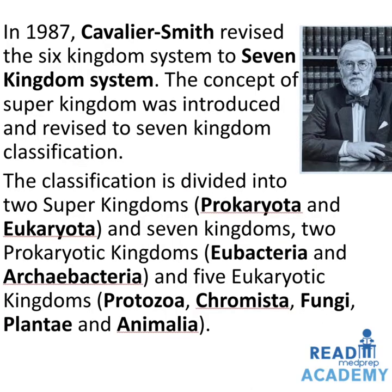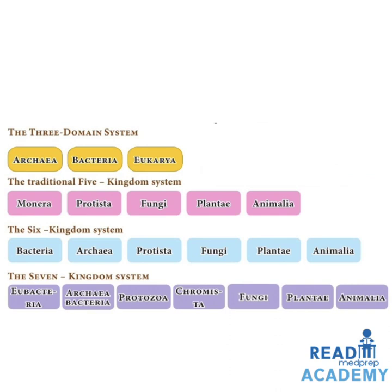In 1987, Cavalier-Smith revised the Six Kingdom classification to a Seven Kingdom system, introducing the concept of super kingdoms. The classification is divided into two super kingdoms — Prokaryota and Eukaryota — and seven kingdoms: two prokaryotic kingdoms (Eubacteria and Archaebacteria) and five eukaryotic kingdoms (Protozoa, Chromista, Fungi, Plantae, and Animalia).